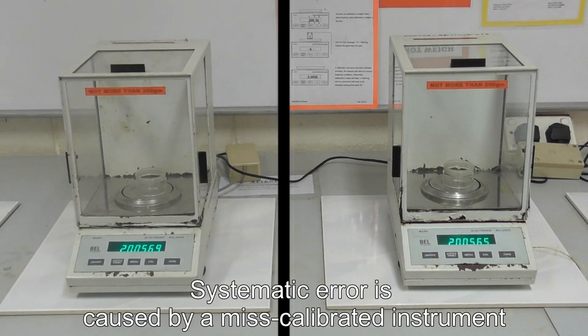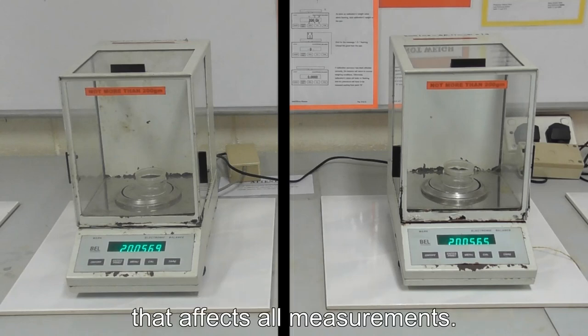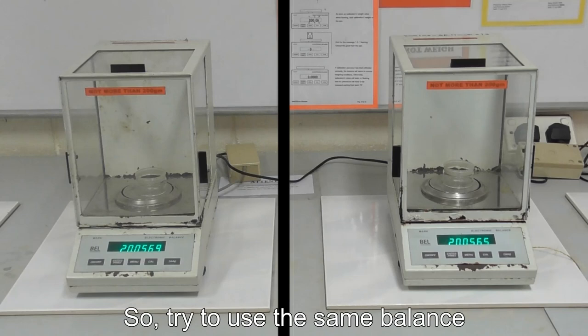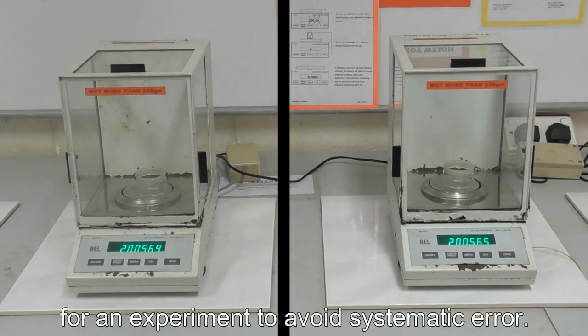Systematic error is caused by a miscalibrated instrument that affects all measurements. So try to use the same balance when measuring any mass for an experiment to avoid systematic error.